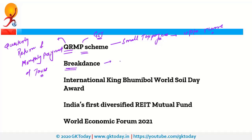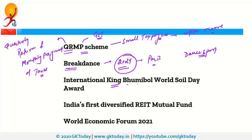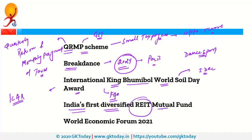Next, Breakdance will be part of the 2024 Olympic Games, which will be organized in Paris — it will be the first dance sport event to appear at the Olympic Games. Next, the International King Boomi Bowl World Soil Day Award was given to ICAR — Indian Council of Agricultural Research — on the occasion of World Soil Day, 5th December, presented by FAO — Food and Agriculture Organization. Next, India's first diversified REIT — Real Estate Investment Trust — mutual fund has been launched by Kotak Mahindra Asset Management Company.